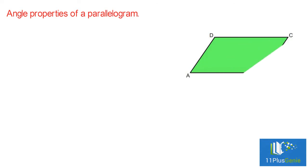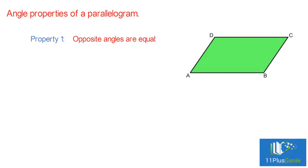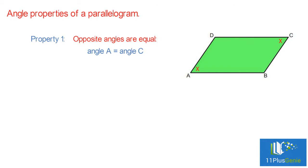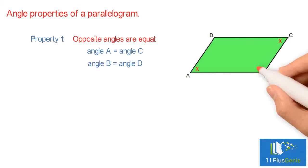Angle Properties of a Parallelogram. You need to be able to apply the following three angle properties. Number one: opposite angles are equal. Angle A equals angle C, and angle B equals angle D.